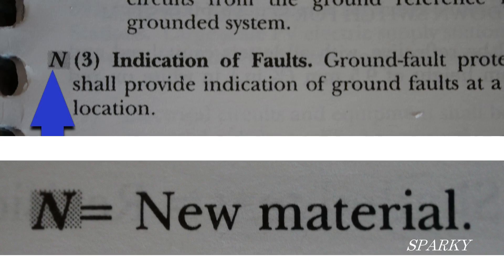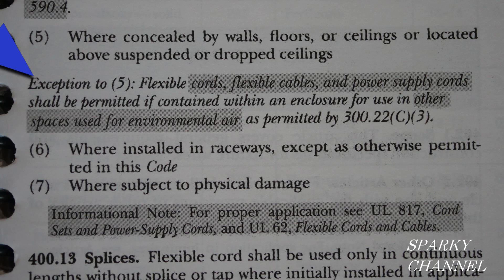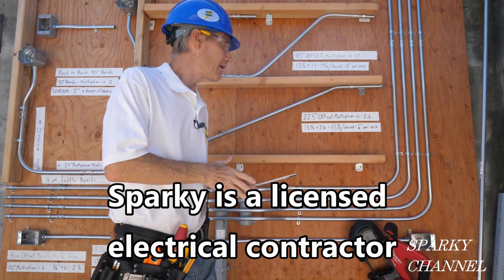The shaded letter N means new material — this alerts you that there is going to be new material there. The italicized text means this is an exception; these italicized sections provide an alternative to a specific rule. The two types of exceptions are mandatory and permissive. When a rule has several exceptions, those with mandatory requirements are listed before those written in permissive language.